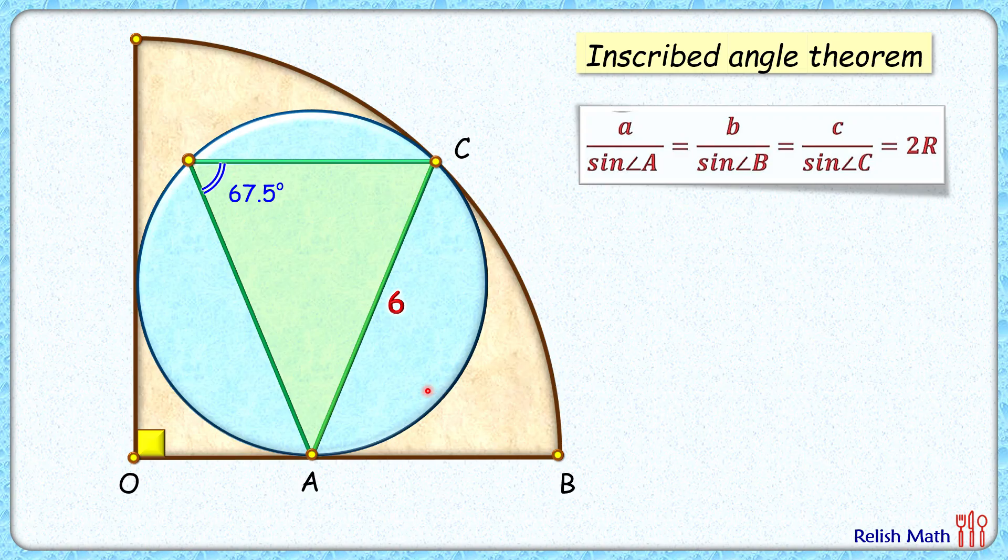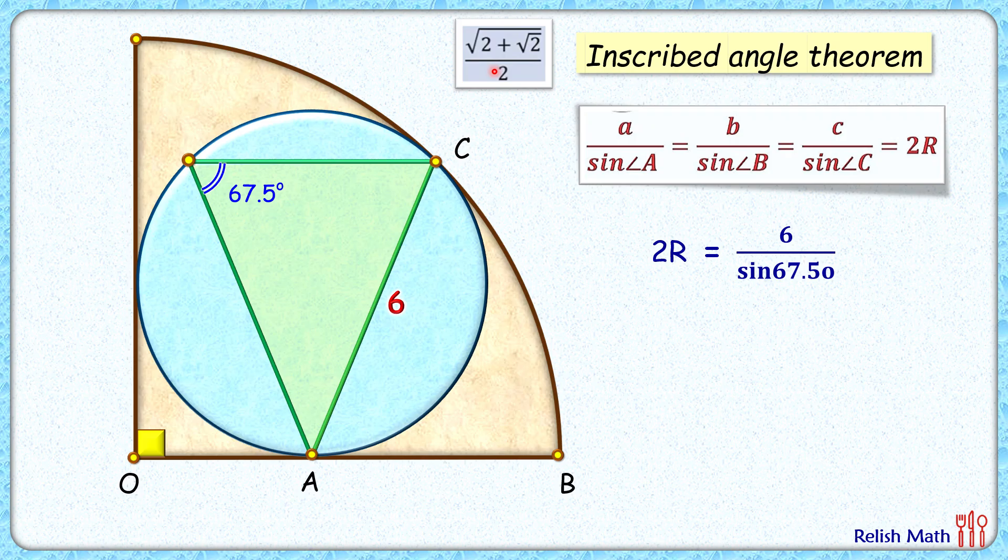Applying this we get two times radius is 6 upon sin 67.5 degrees. Now sin 67.5 degrees you can find using trigonometric identities, but here we'll use calculator to get sin 67.5 as 0.923. Dividing 6 by 0.923, we get two times r as 6.5 centimeters.